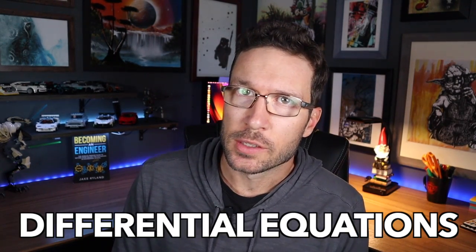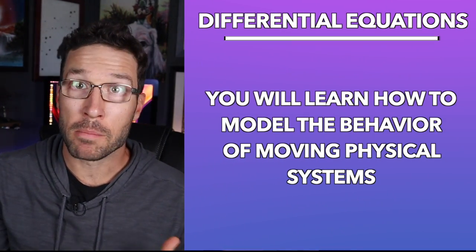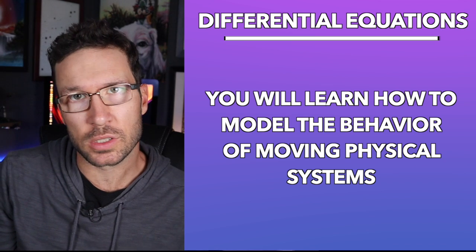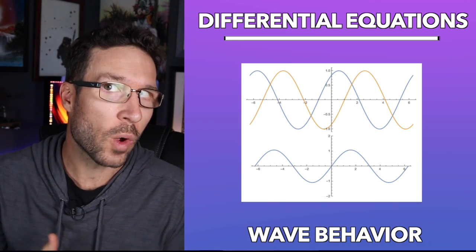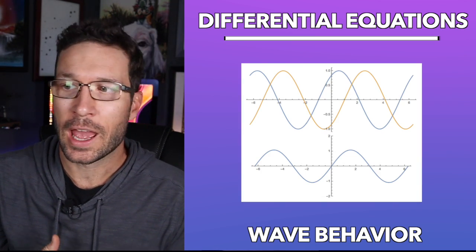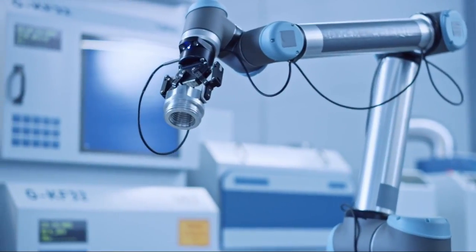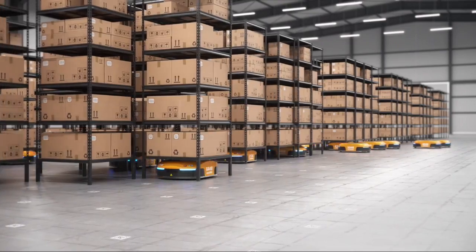Next up we have differential equations. In this course you're going to learn how to model how moving physical systems are going to behave — things like the dissipation of heat, wave behavior, and the oscillation of springs. Differential equations are often used in optimization problems and control systems, which are very relevant to robotics, autonomous vehicles, and industrial automation. Becoming proficient in differential equations is really going to go a long way in designing efficient control systems and optimizing system performance.